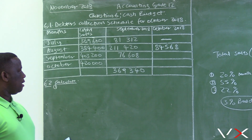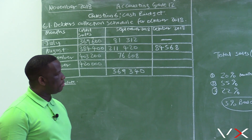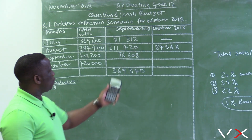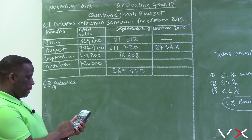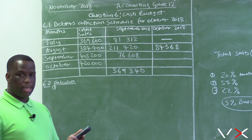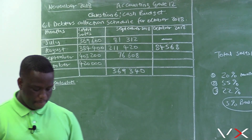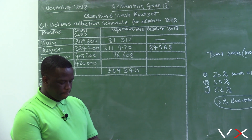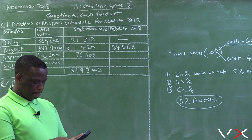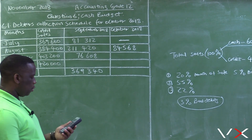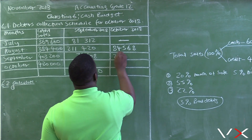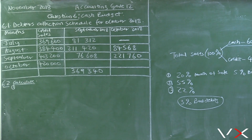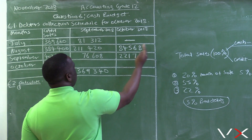For September credit sales, the first collection is in September at 20 percent, the second collection falls in October, and the last collection will be in November. So October is the second collection, which is 55 percent. The credit sales for September are 403,200 multiplied by 55 percent, giving us 221,760. We would still collect something in November, but our budget period ends in October.